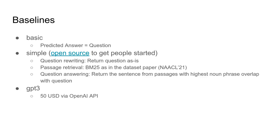We introduced three baseline models. The basic baseline implements a naive approach for question answering — it submits the question as the answer. Though not intuitive at first glance, this baseline is surprisingly hard to beat, as most question answering metrics are based on token overlap between submitted and ground truth answers, and the ground truth answers naturally often share tokens with the respective questions. The simple baseline implements low-effort approaches for each subtask.